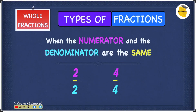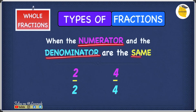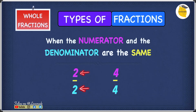Now, let's have a look at our fourth type of fraction, which is whole fractions. A whole fraction is when the numerator and the denominator are the same. So if you have a look over here, we have the numerator, which is 2, and we have the denominator, which is also 2. They're the same — 2 and 2 are the same, of course. So 2 over 2 is a whole fraction.